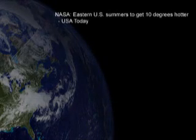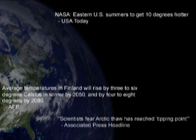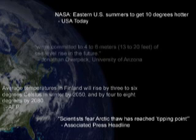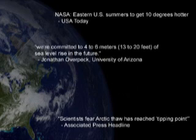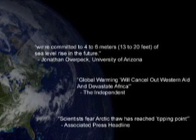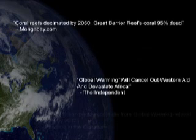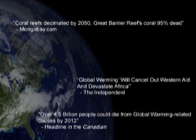Nearly every day we are bombarded with media stories of a coming apocalypse, the result of global warming caused by man's burning of fossil fuels that increase CO2 in the atmosphere. All of these forecasts of doom are based on the results of computer models that project substantial amounts of warming over the next 100 years. But should we fear what these computers are telling us?